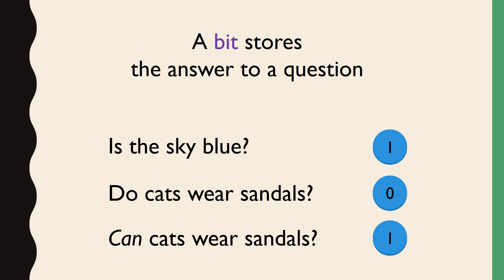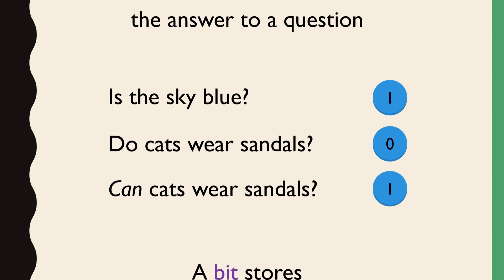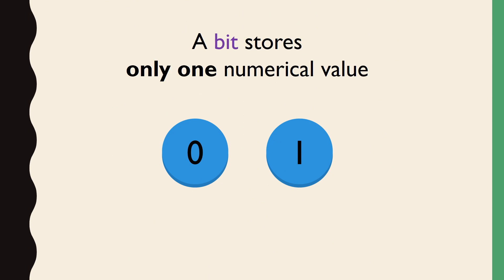So we know now that a bit can store the result of a decision or the answer to a question. We can read the results of those decisions or answers to those questions as numerical values on the bits. We can even use bits to represent numbers, but we need to be a little bit clever about how we do this. A single bit can store only one numerical value, either a 0 or a 1, which, by the way, means bits are binary. They store one of two possible values.